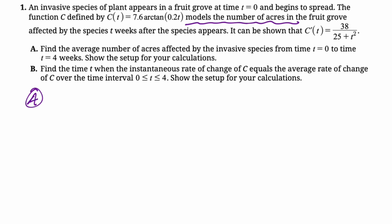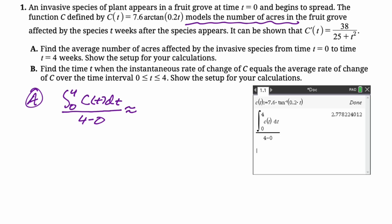For A, I'm going to say that it's the integral from 0 to 4 of C of T divided by 4 minus 0. This is a calculator question, so I went to my calculator, I punched this in and I got approximately 2.778 acres.